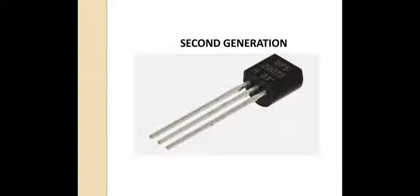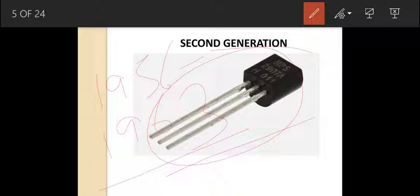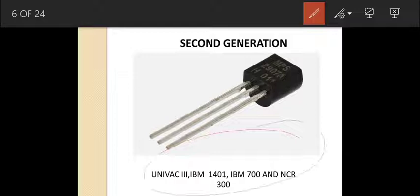In the second generation, transistors were used, and its timeline was from 1956 to 1963. Its features were: they were small and faster compared to first generation computers. As already mentioned, in every generation computers become smaller, cheaper, and more powerful. They were also cheaper to maintain compared to first generation. Examples: UNIVAC 3, IBM 1401, IBM 700, and NCR 300 series.